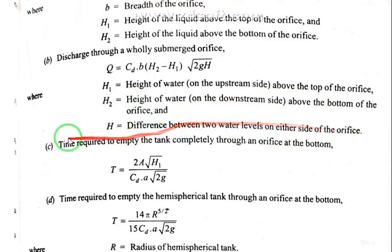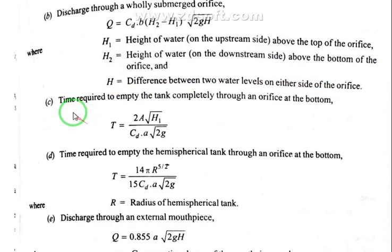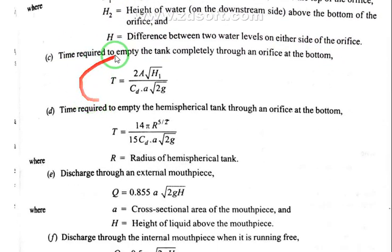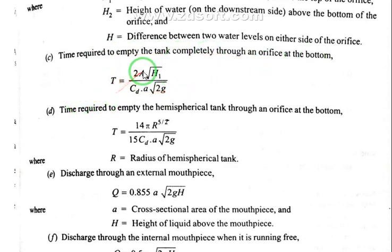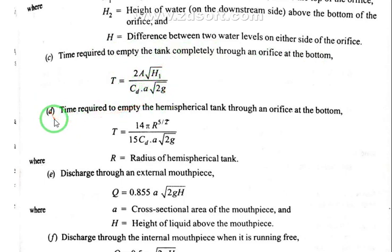Time required to empty a tank completely through an orifice at the bottom: capital T equals 2·A·√H1 divided by (Cd times a times √(2g)), where A is the cross-sectional area of the tank, H1 is the initial head, and a is the area of the orifice.